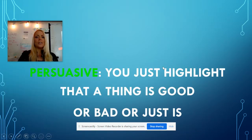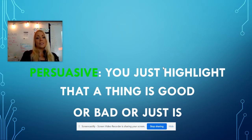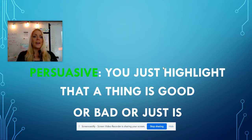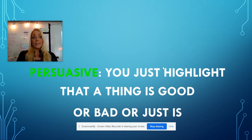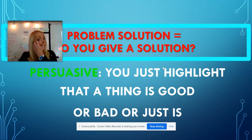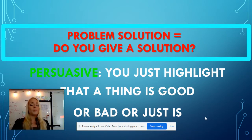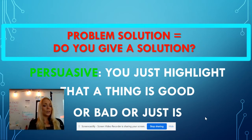The next thing you need to figure out is persuasive versus problem-solution — what's the difference? Persuasive is when you highlight a thing and say that it is either good, bad, or just is. For example, if you wanted to say that racism exists, that would be a persuasive topic. If you wanted to say that feminism is bad, that would be a straight persuasive topic. A problem-solution essay, on the other hand, is when you actually give a solution to the problem itself — this is a problem that exists, and here is my solution.